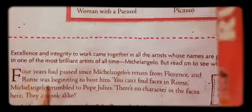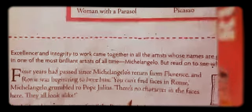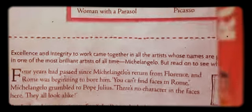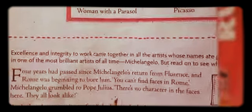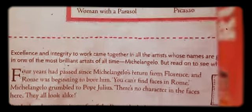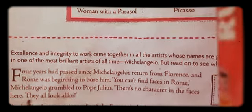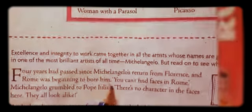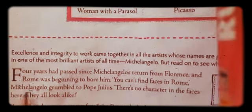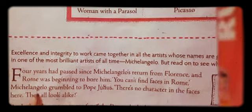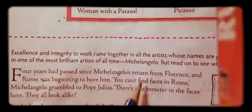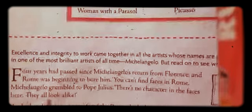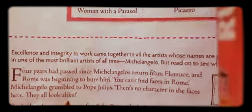You can't find faces in Rome — he was unable to find any faces in Rome matching the artwork he was trying to do. That was the difficulty Michelangelo was facing. Michelangelo grumbled to Pope Julius. From this we understand that Pope Julius had assigned some project to Michelangelo, which Michelangelo was unable to complete because he was not getting those faces he expected in Rome.